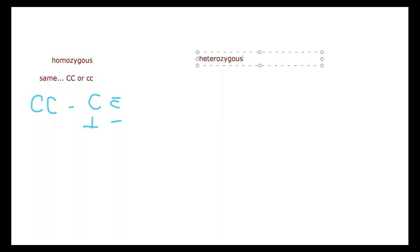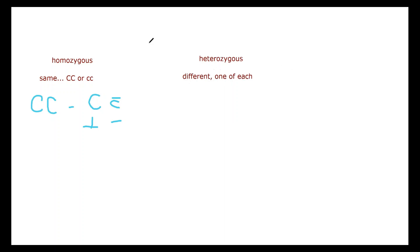Heterozygous is going to be different — one of each. So like on Duffy: FYa and FYb. Instead of big C and little C, your two partners for Duffy are FYa and FYb. For heterozygous, you would have one of each, so you would be Duffy A positive and also Duffy B positive on a panel.